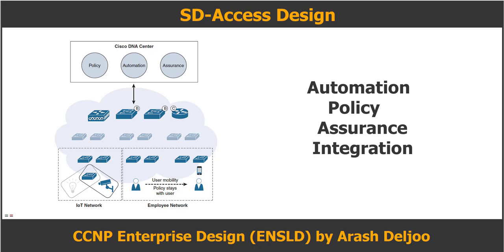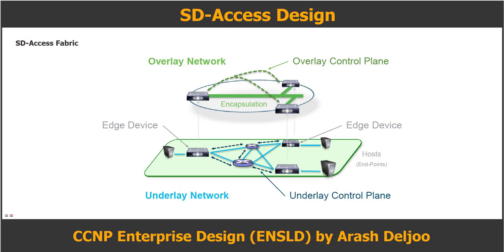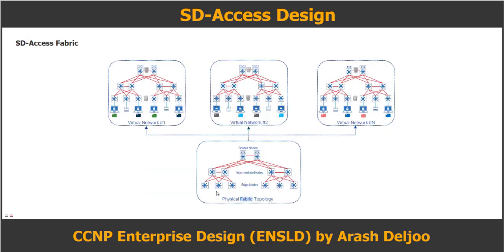The SD Access fabric has two different layers: underlay and overlay. The underlay is responsible for physical devices and traffic forwarding, including multiple physical devices. The overlay is a logical layer that consists of wired and wireless users where services and policies are applied. The layered separation between the overlay and underlay allows one or more logical networks to be provisioned to meet the design intent without changing anything on the underlay — one physical fabric topology with multiple virtual networks.